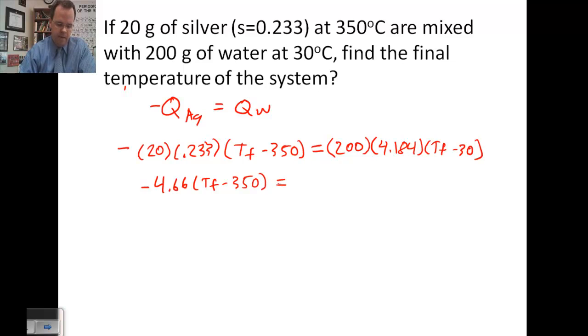200 times 4.184 comes out to 836.8, T final minus 30. I'm going to divide both sides by negative 4.66.